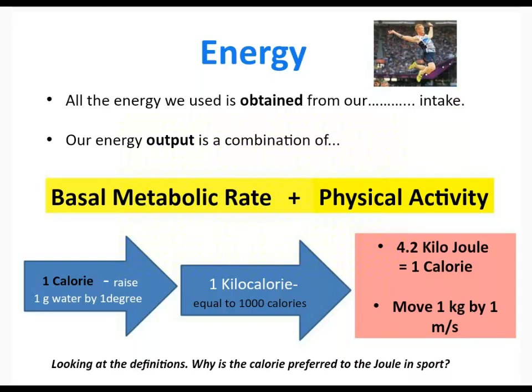Basal metabolic rate is simply the amount of energy we need to stay alive for our everyday function — if you were to do no physical activity, how much energy would you need? It's sometimes also called resting metabolic rate. Now, one calorie raises one gram of water by one degree. If it's a capital C calorie, that means it's a kilocalorie — a kilocalorie is a thousand small-c calories. When you look at the back of a packet you'll read it as calories, even though it says kcal. Kilojoules won't be used much here; we're interested in the calories or kilocalories.